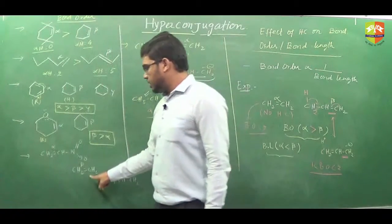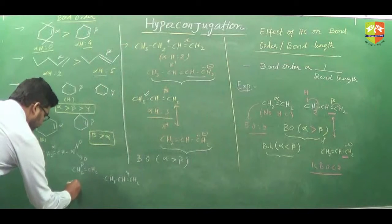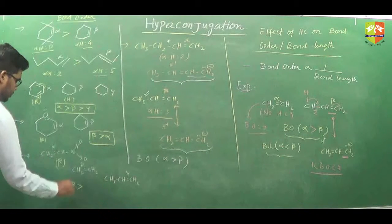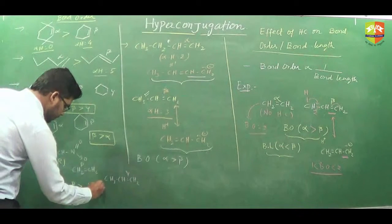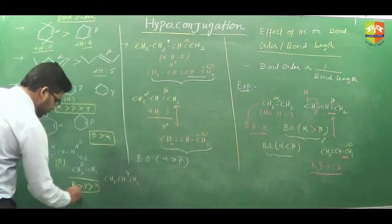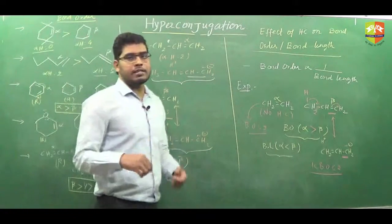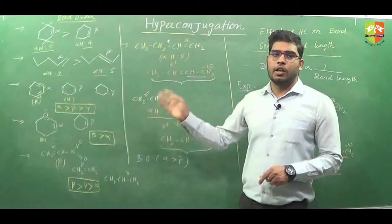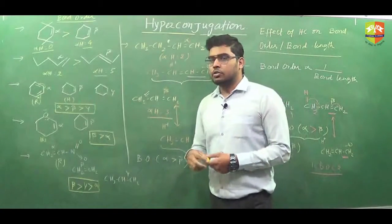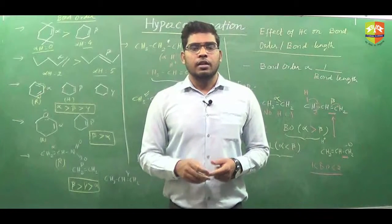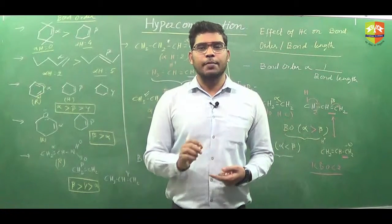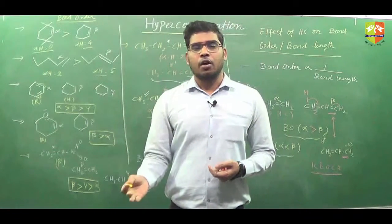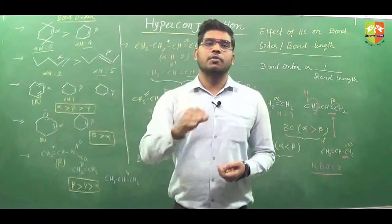Here again we have resonance — this pi will convert into sigma and here we have hyperconjugation. Resonance is always dominating. This has more tendency to convert into sigma, so bond order of beta is more than that of alpha. In the last question, this is an alkene — bond order is 2. Here we have resonance, so this bond order will be minimum and gamma will be in between. Because of resonance, if double bond is converting into single bond, the bond order is lesser than in hyperconjugation where the double bond is also converting into single bond.